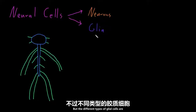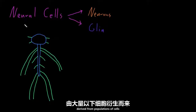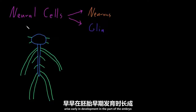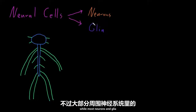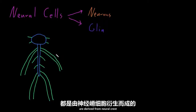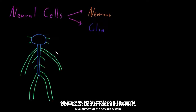The different types of glial cells are found only in one or the other. Most neural cells are derived from populations of cells called neural stem cells or neural crest cells, and both of those cell types arise early in development in the part of the embryo called the ectoderm. Most neurons and glia found in the central nervous system are derived from neural stem cells, while most neurons and glia found in the peripheral nervous system are derived from neural crest cells.